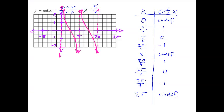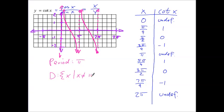The asymptotes are pi apart — from 0 to pi to 2 pi — so the period is pi, just like the tangent. For the domain, x cannot equal 0, pi, 2 pi, and so on; we write this as x ≠ k·pi, where k is any integer, which also covers the first asymptote on the y-axis. The range is all real numbers.